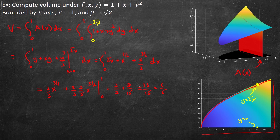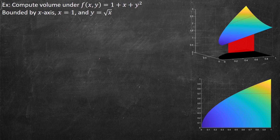Let's see a somewhat different approach to the same question. Now I'm doing horizontal strips instead of vertical strips — considering an area at a specific y value, changing the x values at that specified y. The problem is the same and the answer for the volume should be the same.